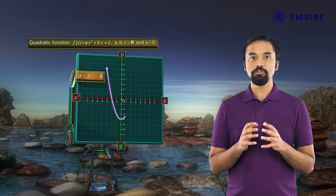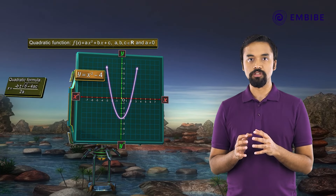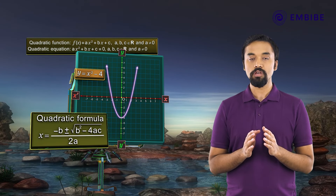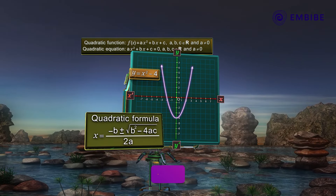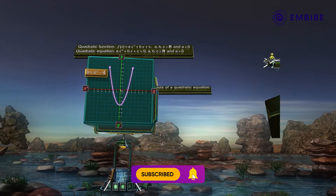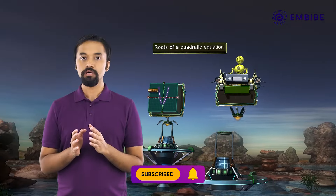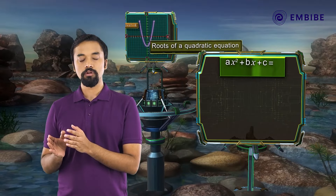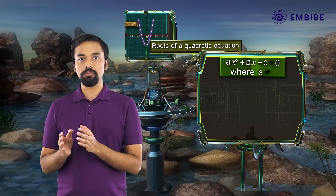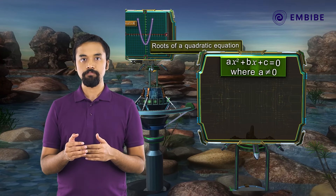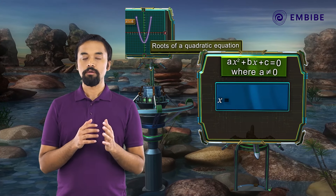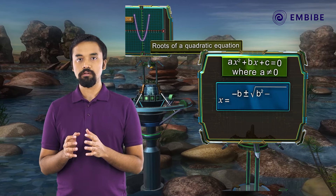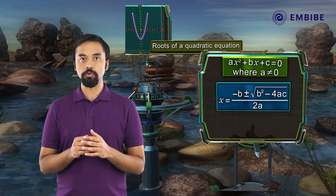We have learnt to graph a quadratic function and also established the quadratic formula for finding the roots of a quadratic equation. The roots of a quadratic equation ax² + bx + c = 0, where a ≠ 0, are given by x = (−b ± √(b² − 4ac)) / 2a.